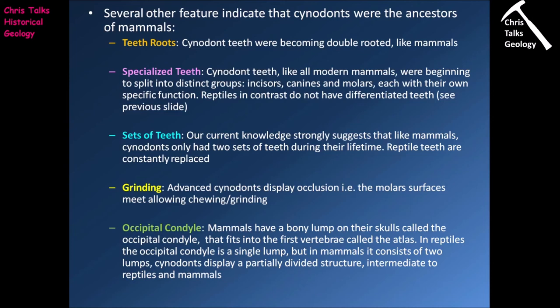Another thing we see with the cynodonts is an improved ability to pulp their food — to grind it in their mouths. This is because of the appearance of molars: big, broad, flat teeth specifically designed for pulping food. The more efficiently you can pulp your food, the finer the particle you break it down to, and the more nutrients you can extract. The presence of these molars and a slight change in jaw design helps make mammal chewing more efficient compared to the types of chewing used by reptiles like dinosaurs.